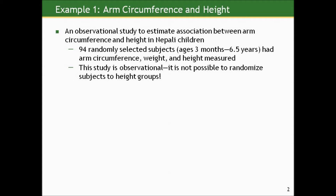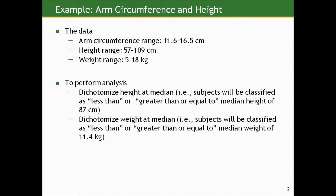This study is clearly observational for trying to relate arm circumference to height. Our exposure is height — it's certainly not possible to randomize people to different height groups. The arm circumferences range from 11.6 to 16.5 centimeters, heights range from 57 to 109 centimeters, and weights range from 5 to 18 kilograms. To simplify and use techniques from Stat Reasoning 1, we're going to dichotomize both height and weight at their median values. So even though they were measured continuously, we'll turn them into binary indicators. Subjects will be classified as less than or greater than or equal to the median height of 87 centimeters.